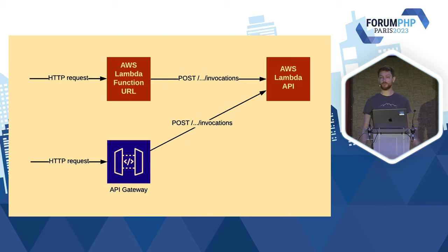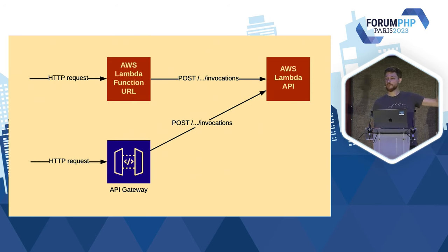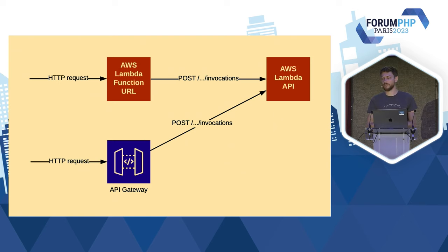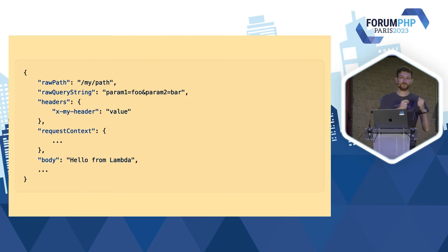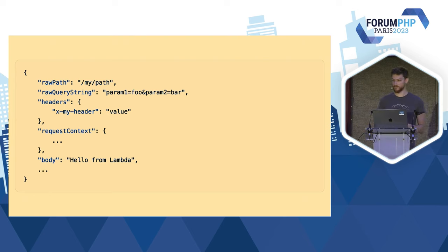On peut aussi utiliser d'autres choses chez AWS comme des API Gateway, des load balancers. Moi, j'ai pris Function URL parce que c'est gratuit et que ça marche. Ce qui est intéressant de voir, c'est qu'effectivement, on a une requête HTTP qui arrive, c'est un site, c'est une API, mais ensuite, Lambda Function URL vient appeler l'API publique d'Amazon Lambda en envoyant la requête sous un format JSON. Et dans Lambda, on va se retrouver avec cet objet JSON.